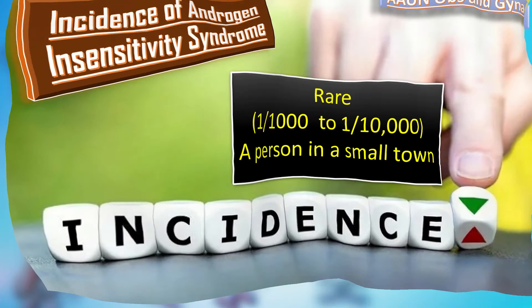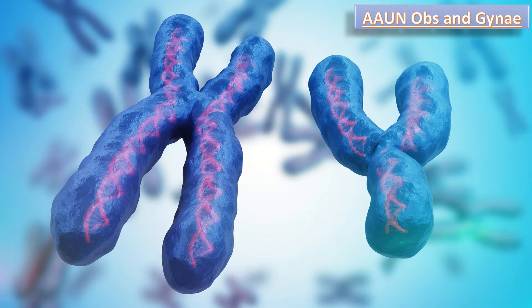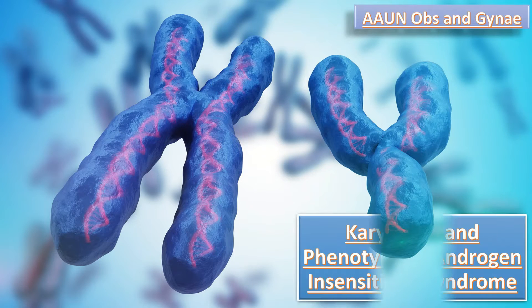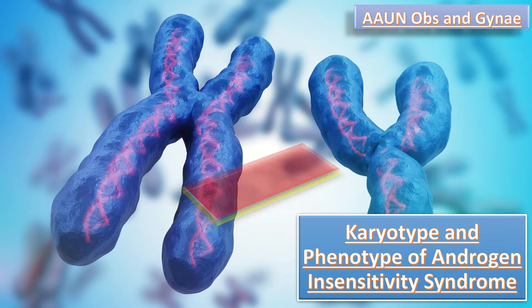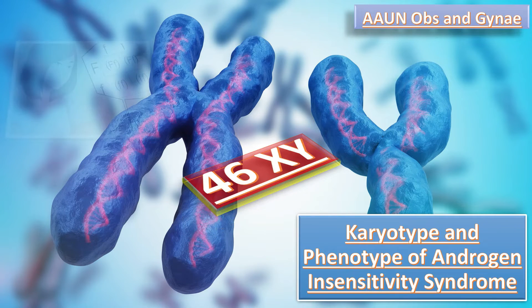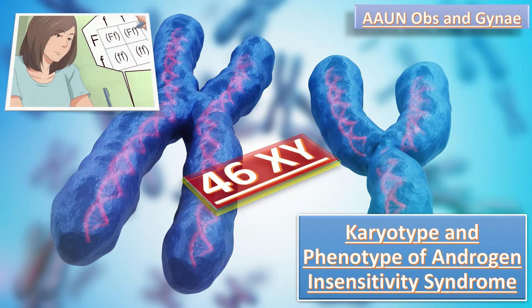What is the karyotype and phenotype of Androgen Insensitivity Syndrome? The karyotype of AIS is XY. The phenotype of AIS is female.